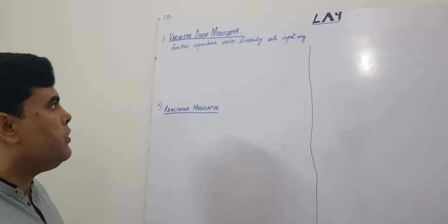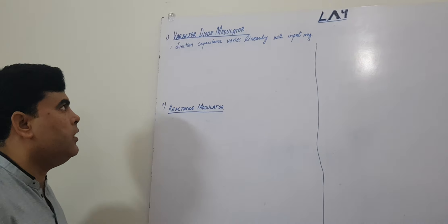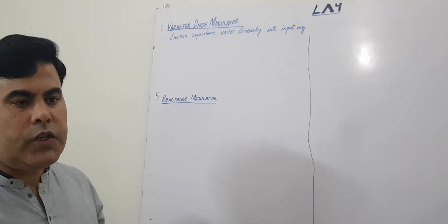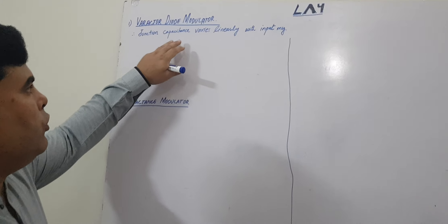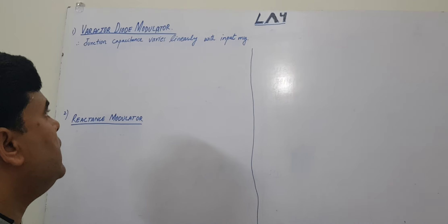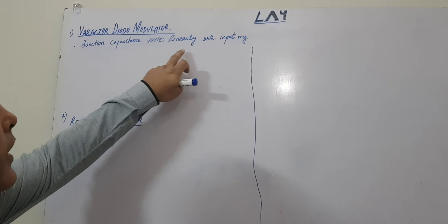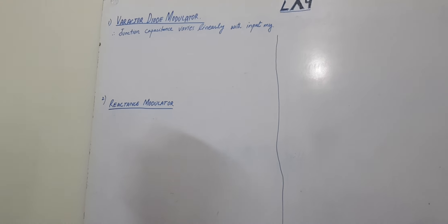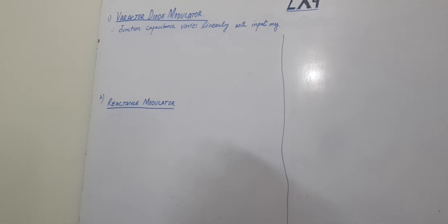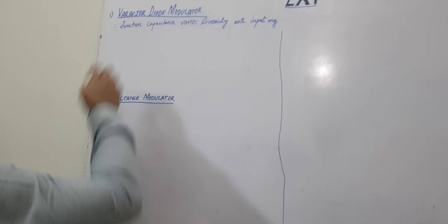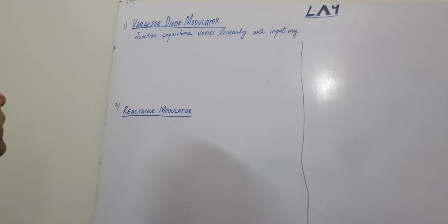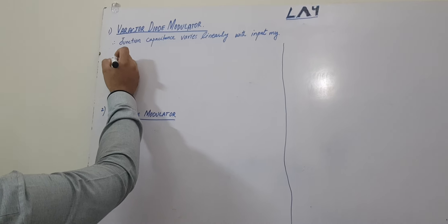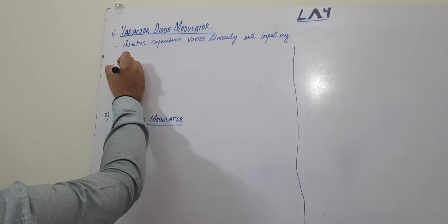In this lecture we are going to discuss various methods of direct generation of FM. The first one is the varactor diode modulator, whose junction capacitance varies linearly with the input message. We know that diode is a nonlinear device, but the capacitance of the varactor diode, which is reverse biased, varies very linearly with the applied voltage.